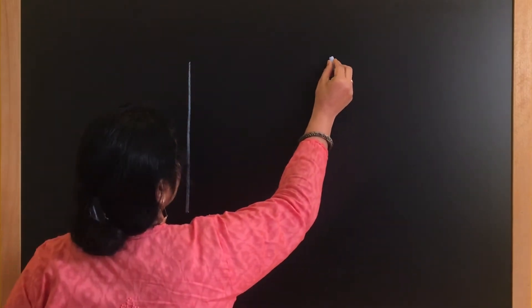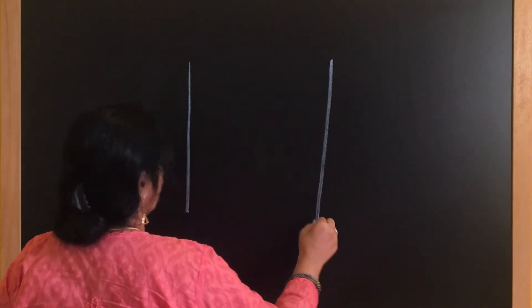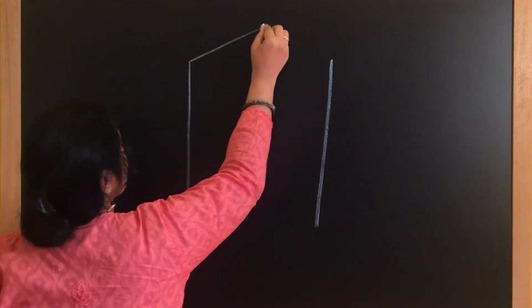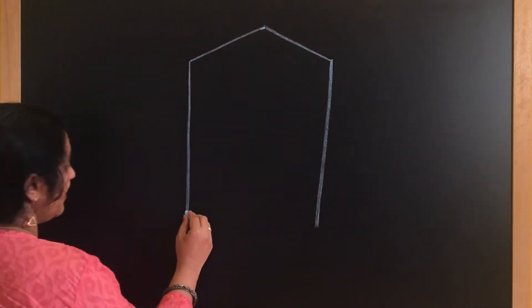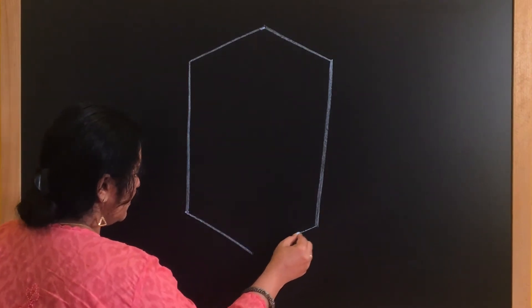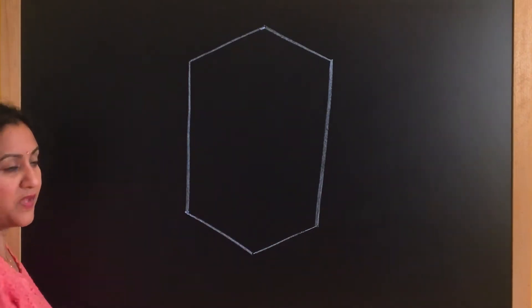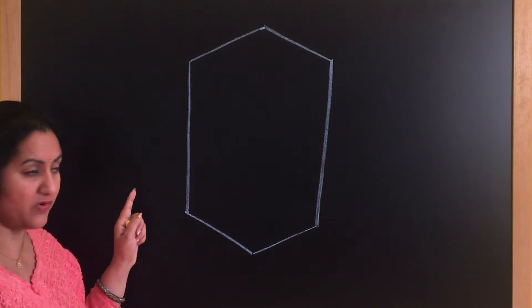For a hexagon, you draw two lines and just join at one point here. Same thing here also, draw two lines and join. So this is a hexagon, simple right.